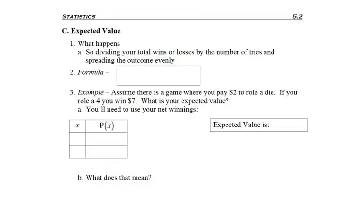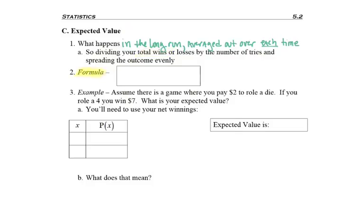When working with discrete random variables and specifically talking about the mean and standard deviation, the next logical thing to talk about is expected value. What this is, is what happens in the long run, averaged out over each time. If you were to take your total wins and divide that by how many times you played the game, it would be like having the same outcome each time. The formula for expected value is E equals the sum of the outcome times the probability. That probably looks familiar because it's the same formula we use for the average of a discrete random variable.